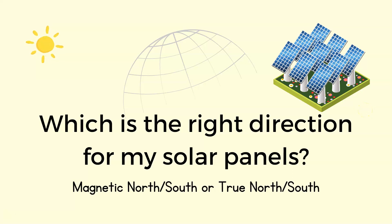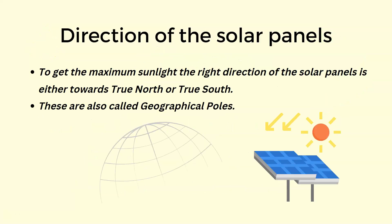Hello friends. Which is the right direction for my solar panels — is it magnetic north-south or true north-south? Let us understand this in the video. To get the maximum sunlight, the right direction of the solar panels is either towards true north or true south.